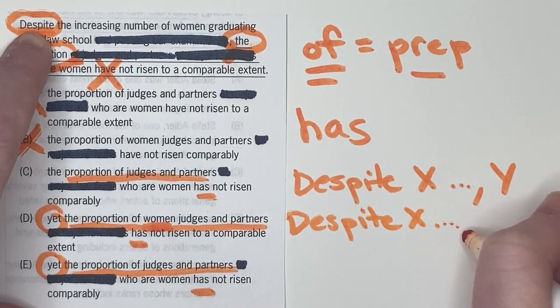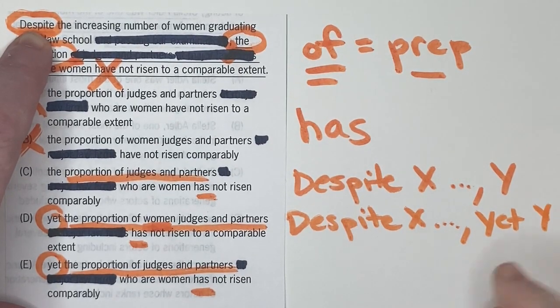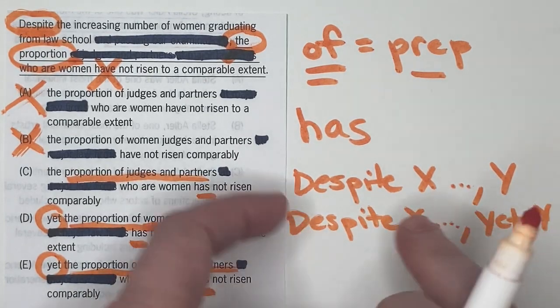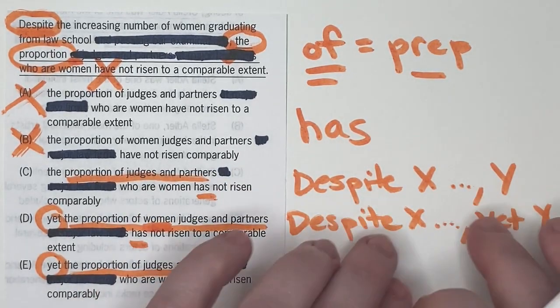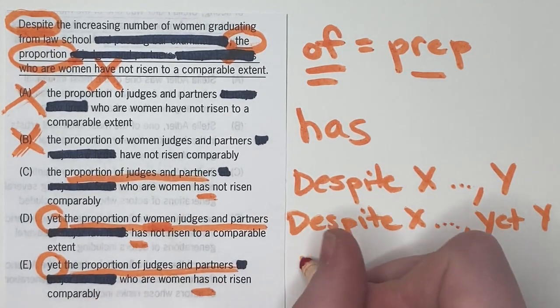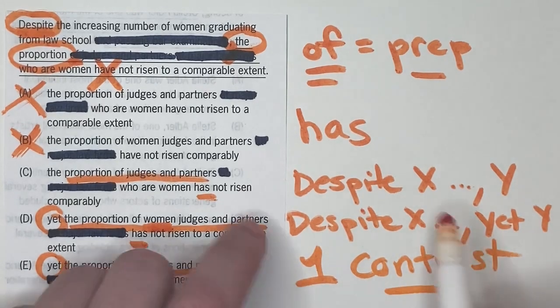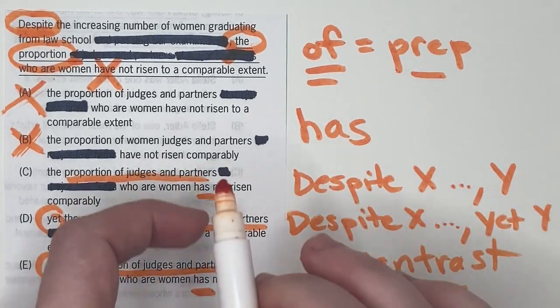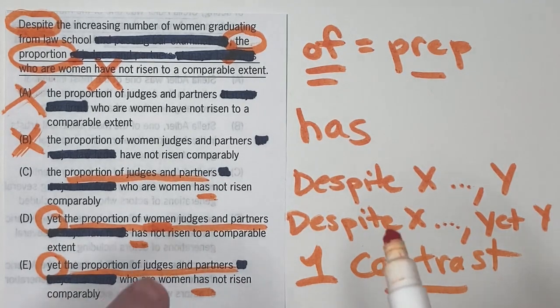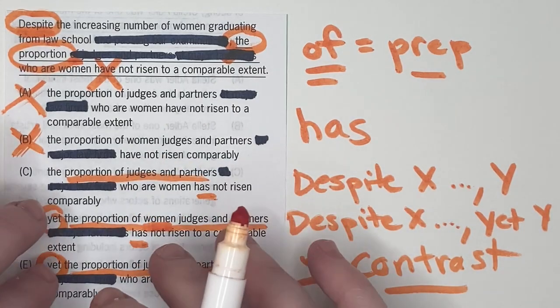Despite X, comma, blah, blah, blah, yet Y. And I think sometimes people think you need both because they almost think of it like parallelism, but that's not parallel at all. So really you only need one contrasting keyword per sentence, just one. So it could be despite, yet, although, however, whatever it is. So if you're seeing a lot of them piled on in a sentence like this, probably not correct.